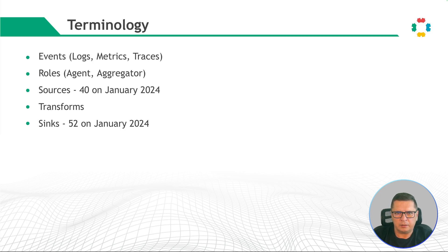Before we dig deeper, let me tell you about Vector's terminology. Events represent the individual units of data in Vector — they can be logs, metrics, or traces. We can deploy Vector in two roles using the same binary: as an agent or as an aggregator. Usually we deploy the agent to the edge to perform data collection. The aggregator role is designed to collect and process data from multiple upstream sources, which could be other Vector agents or non-Vector sources. A source defines where Vector should pull data from or how it should receive data pushed to it. A topology can have any number of sources, and as it ingests data, it normalizes it into events via transforms. Examples of sources include file, syslog, stdin, or an S3 bucket.